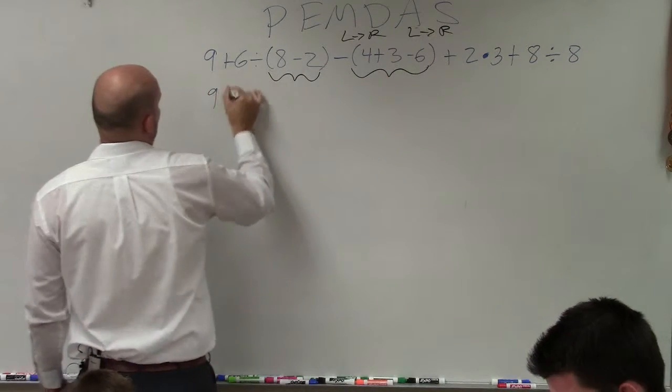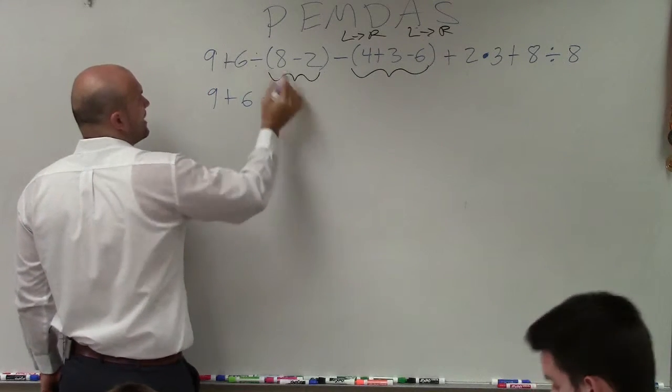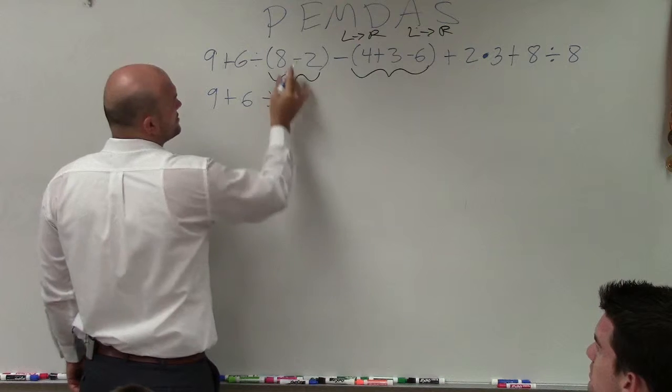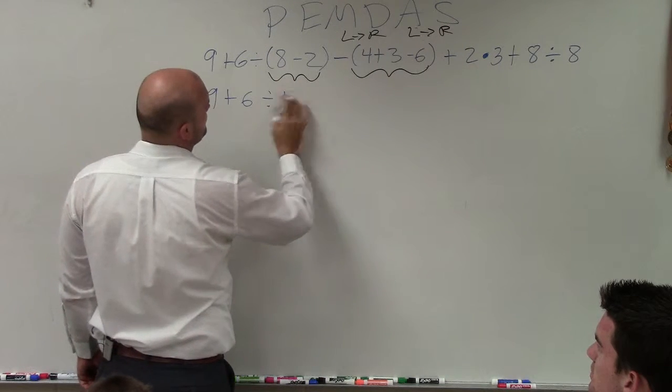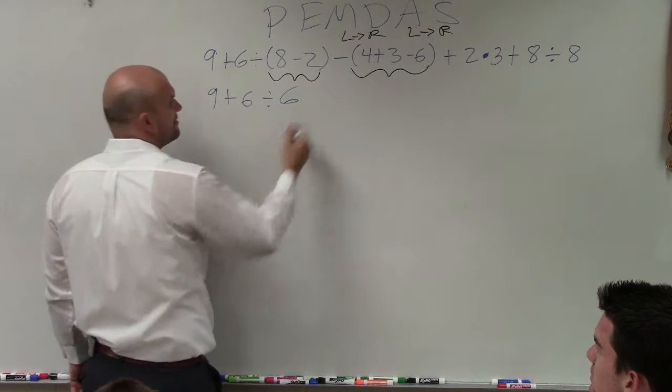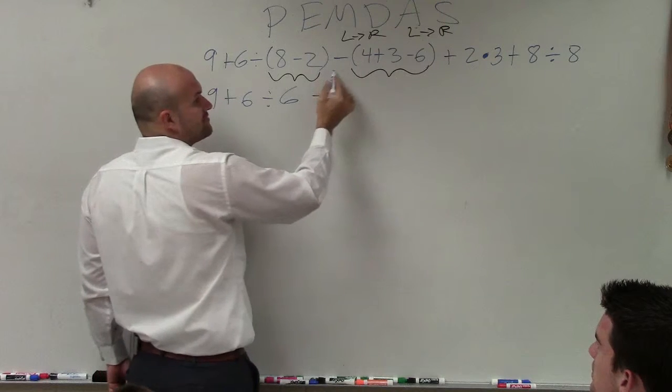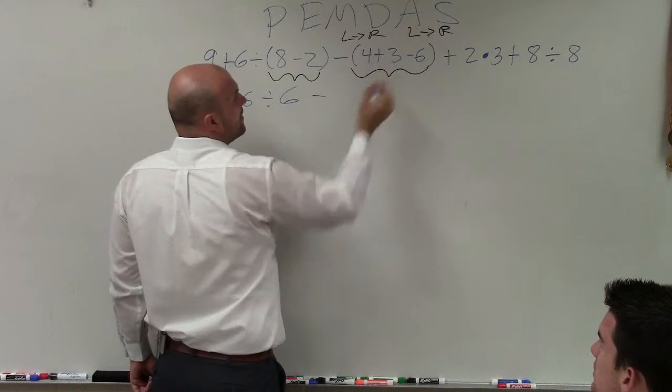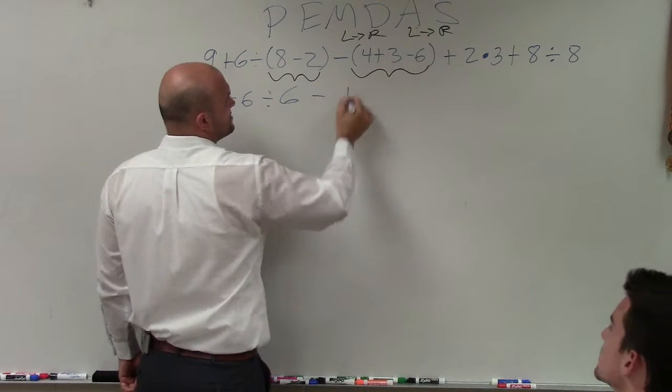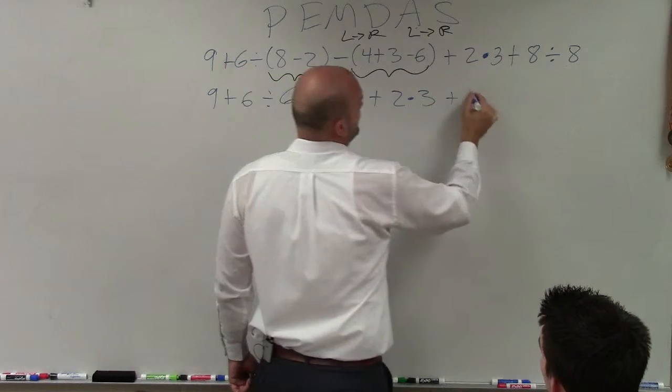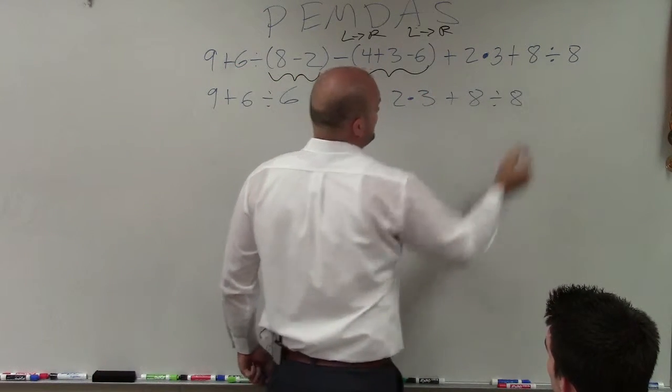So I have 9 plus 6 divided by 8 minus 2 is going to be 6, minus, going from left to right, 4 plus 3 is 7, minus 6 is 1, plus 2 times 3 plus 8 divided by 8.